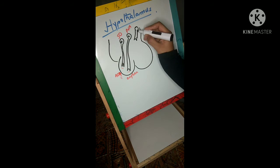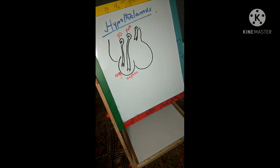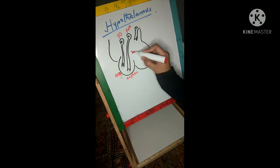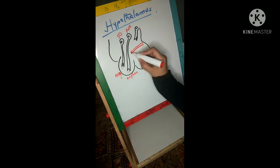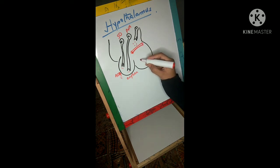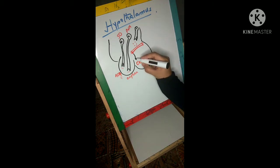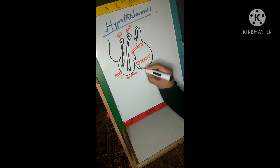Now I am drawing the arcuate nucleus. The arcuate nucleus results in the release of releasing and inhibitory factors that are released into the blood vessels of the portal system. Through these blood vessels, these factors later cause the release of hormones in the anterior pituitary.